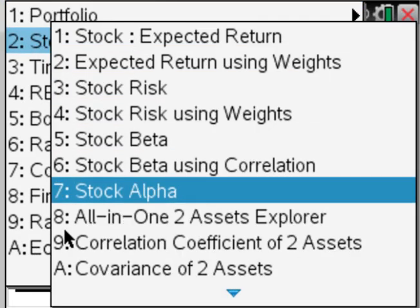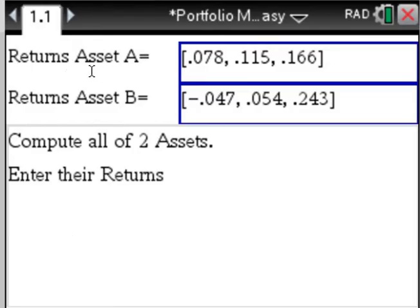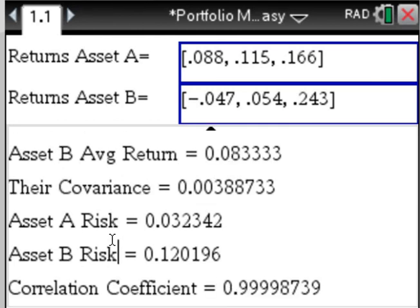Now the handiest part is the all-in-one two-asset explorer. Enter the returns of both assets and you get their returns, their covariance, their risks, the correlation coefficient. Very handy.